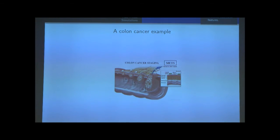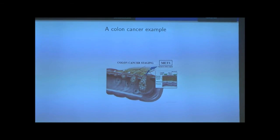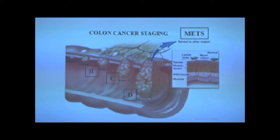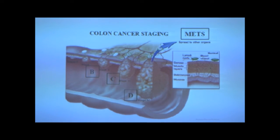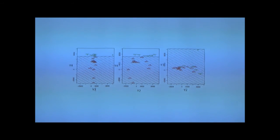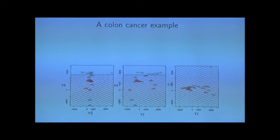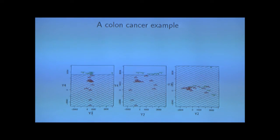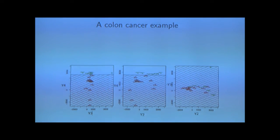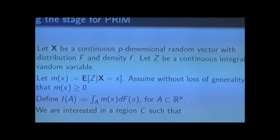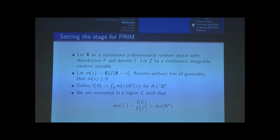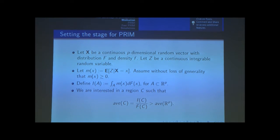The motivation for this work is a colon cancer example that Sunil Rao and John Dazard were working on. In colon cancer, there are stages and some are metastatic. They observed subgroups within each stage with different survival outcomes, even inside those stages. The main reason we started thinking about these problems was because they needed to find subgroups, and to do that they used the PRIM algorithm — Patient Rule Induction Method.